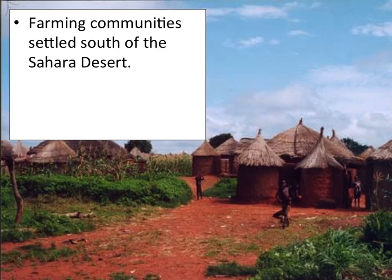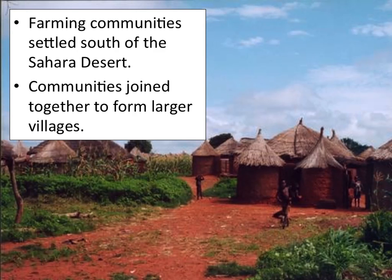A lot of these farming communities settled south of the Sahara Desert. As we covered in the last lesson, going south you had the Sahara Desert, the Sahel region, the Savannah, and below that the forests and rainforests. The further south you were, the more agricultural land was available to grow food and the more water was available. Many of these communities then joined together to form larger villages, growing from small family-oriented settlements into something bigger.